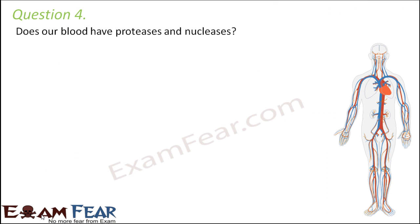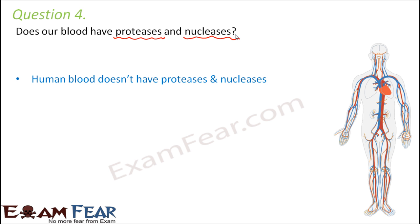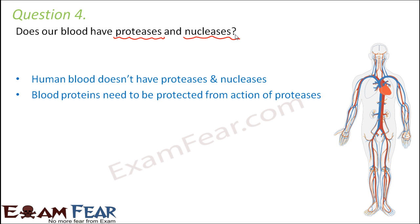Question number 4: Does our blood have proteases and nucleases? Proteases are enzymes that degrade proteins, while nucleases help in the breakdown of nucleic acids. Human blood does not have proteases or nucleases. We cannot have proteases in blood because blood contains a lot of proteins — we do not want them to be decomposed. Instead, we have certain factors in blood that prevent proteases from being present, so blood proteins are protected from their action.